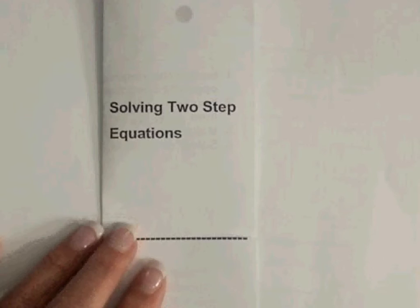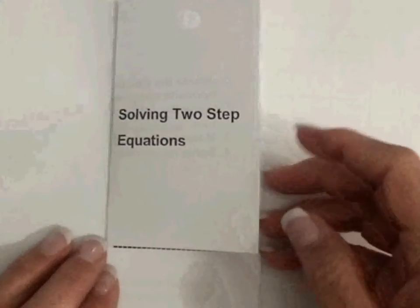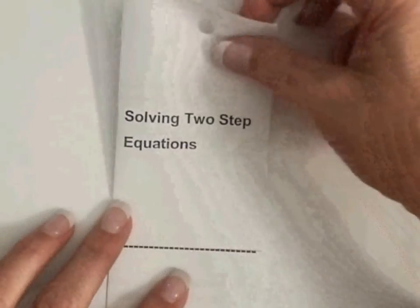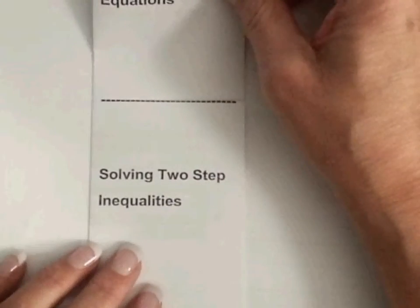We're starting solving two-step equations today. You should have your small foldable and fold it in half and cut one line right here so you have two different doors. The top is solving two-step equations, the bottom is solving two-step inequalities. We'll get to that later.